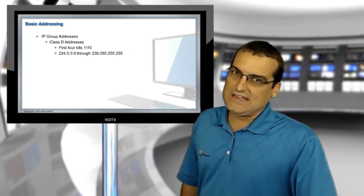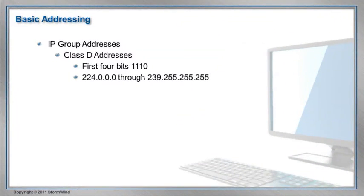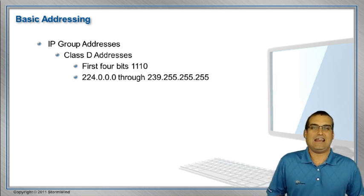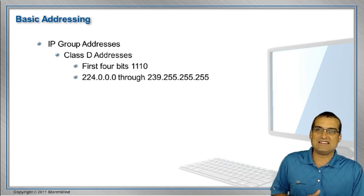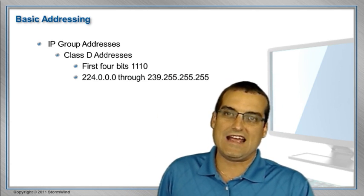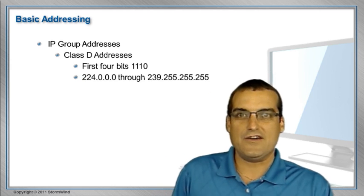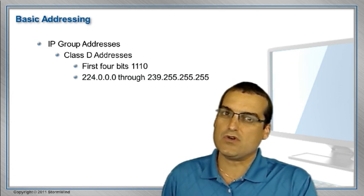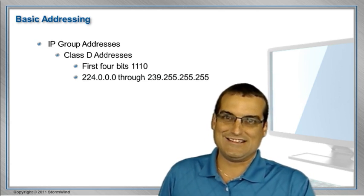Let's jump into a look at multicast addressing. From your CCNA studies, you probably remember that we have Class D addresses that are multicast addresses. These addresses have the first four bits in that 32-bit IP address set to 1110. That gives us a numeric range for our multicast addresses of 224.0.0.0 through 239.255.255.255. That's the overall multicast address range, but it's very important to realize that not all of these addresses are created equal.